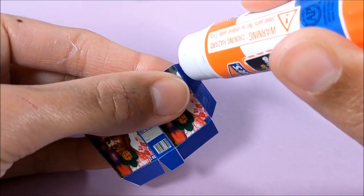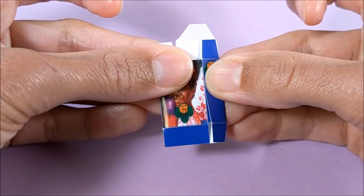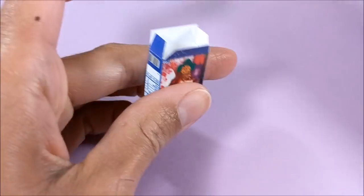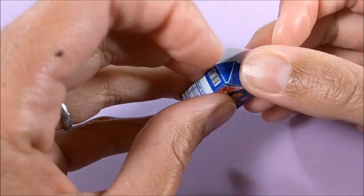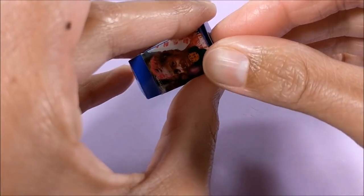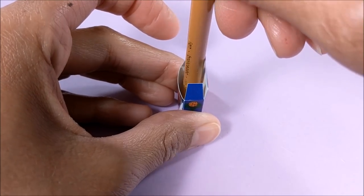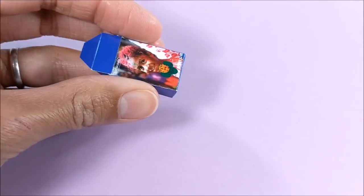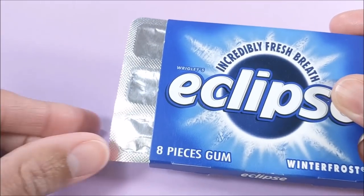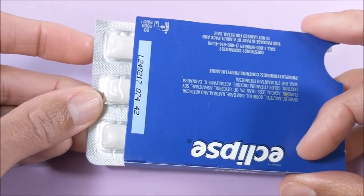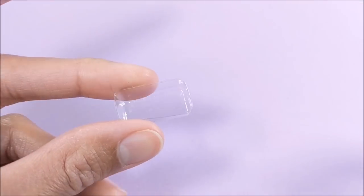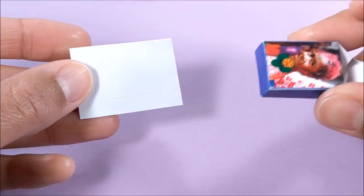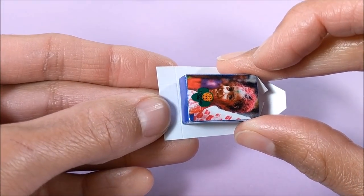Then glue my side tab and bottom. And to hold the cookies, I'm just using a section from a gum pack. But if you don't have that, you can always just make a box using cardstock.